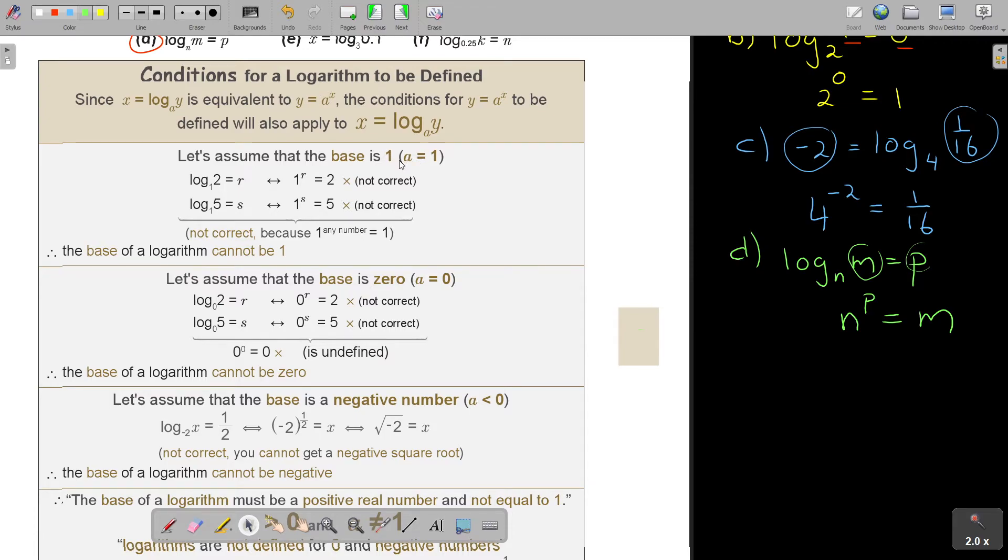So let's assume that the base is 1. So if the base is 1, if I then swap, it must make sense. As I said, you cannot swap it and it don't make sense. To the power 0 is 1. It makes sense. But if you have 1 to the power r equals 2, that's not correct. So 1 to the power s, that's not correct.